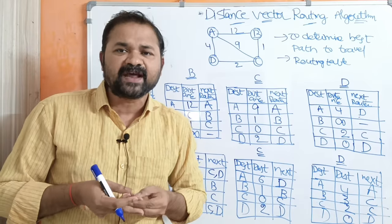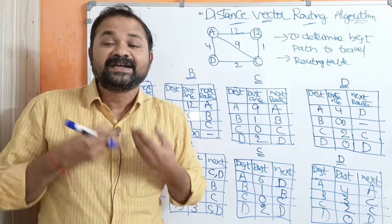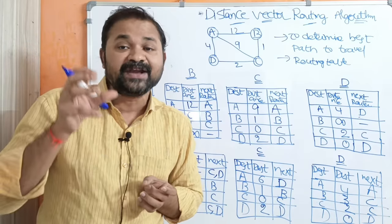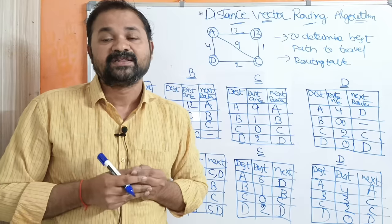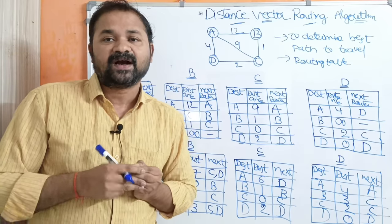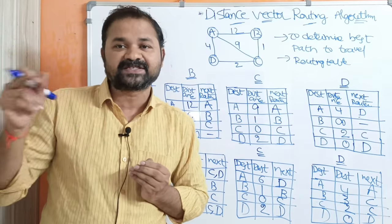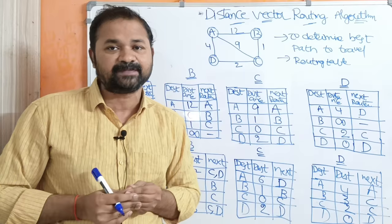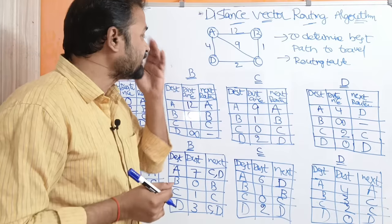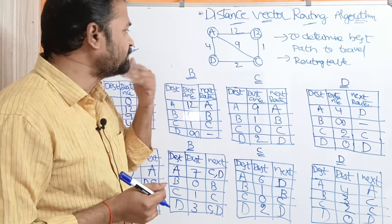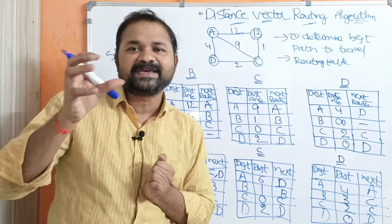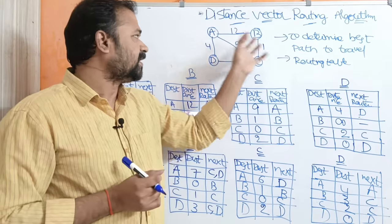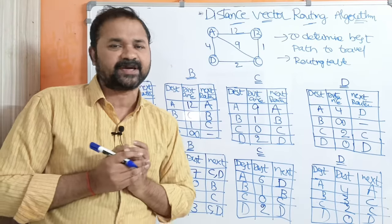Suppose if the graph contains 10 routers, then maximum we will get 10 minus 1, that is 9 iterations. In the examination, it is better to take a graph which contains a limited number of routers.